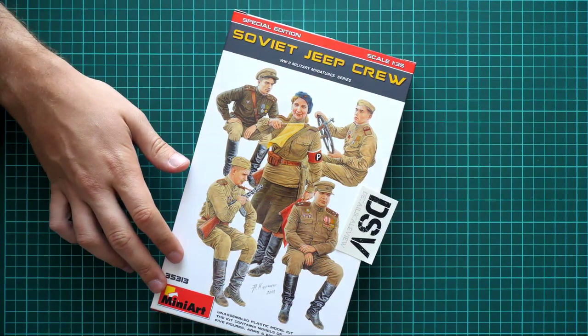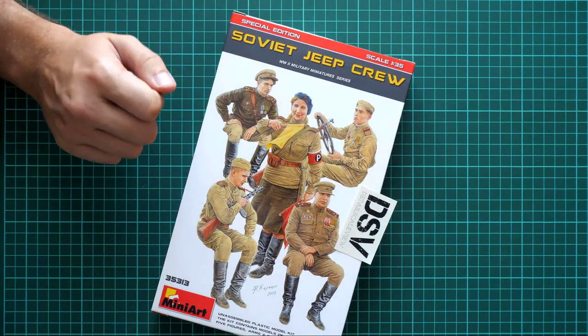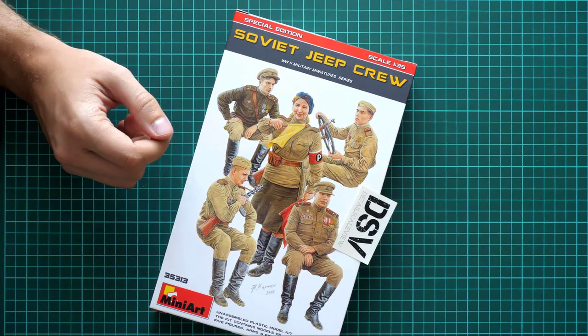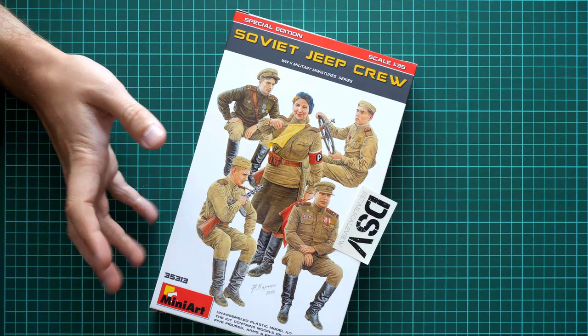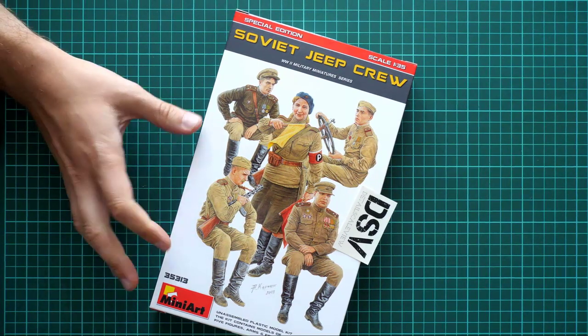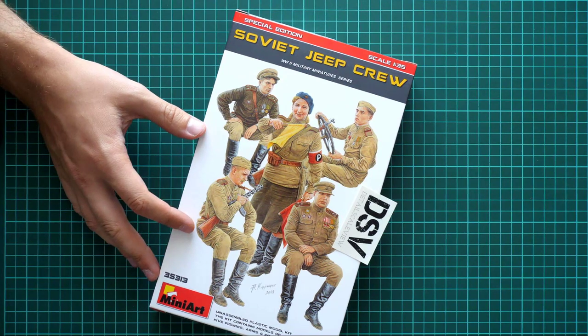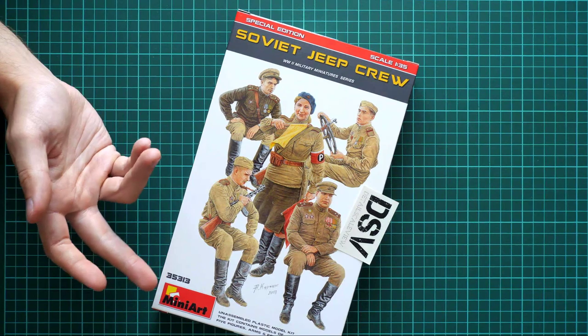This is a MiniArt kit molded in 1:35 scale. It's a special edition as written here, but not a limited edition. It contains a Soviet Jeep crew in 1:35 scale, so it will be handy for some interesting dioramas in World War II setting. There are some suitable kits available from MiniArt, but you can use these figurines with any kit you'd like.